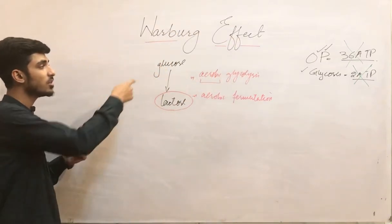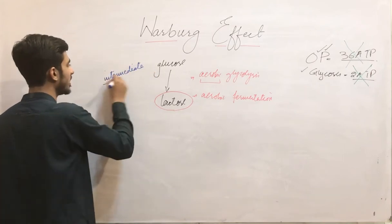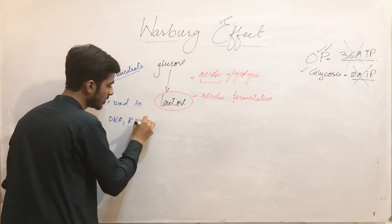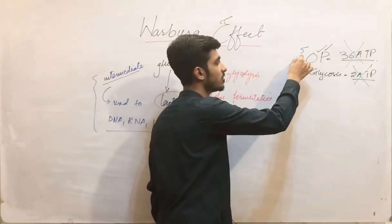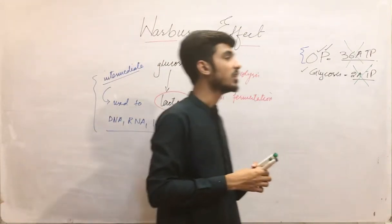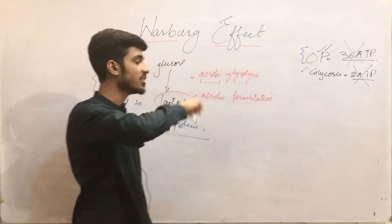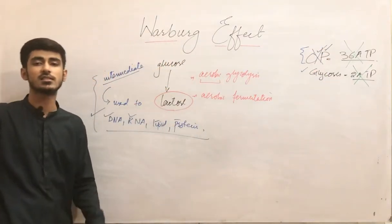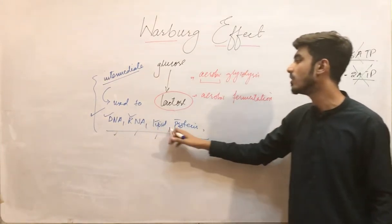Why do they prefer the glycolytic pathway? Because the intermediates of the glycolytic pathway can be used to produce cellular components like DNA, RNA, lipids, and proteins. While oxidative phosphorylation does not provide the intermediates that help in cellular component development. So cellular component synthesis — DNA, RNA, lipid, and protein synthesis — is more important than ATP, and that is only supported by the glycolytic pathway, not by oxidative phosphorylation. That is the reason rapidly growing cells, whether in embryological development or in cancer, all prefer the glycolytic pathway.